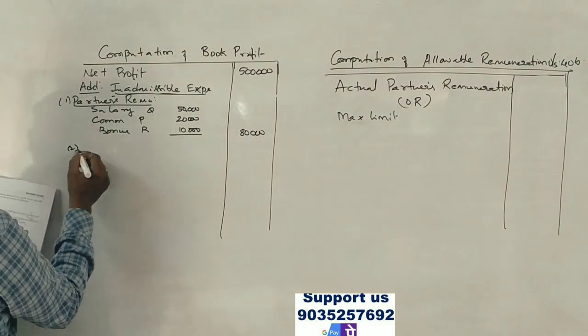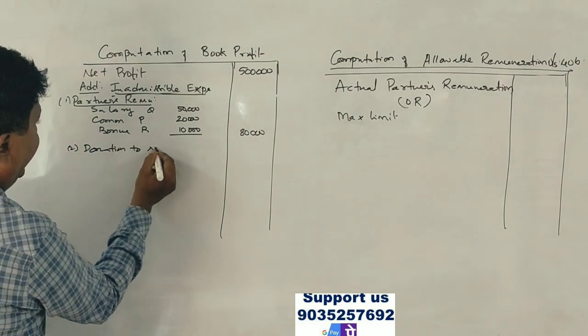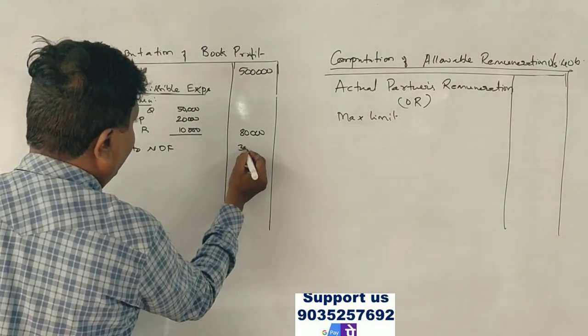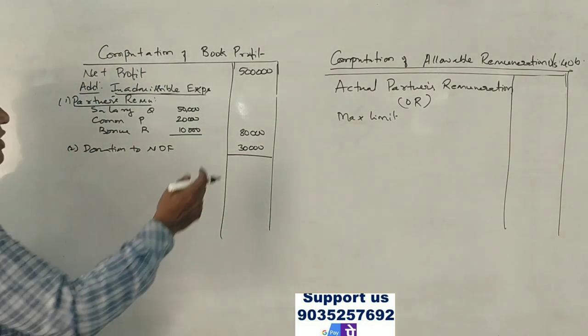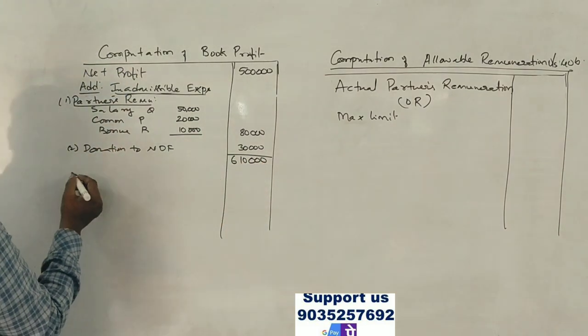Total partners remuneration is 80,000 rupees. If you have a donation, you have to add back the inadmissible expenses. The total is 6,10,000 rupees.